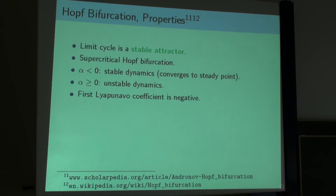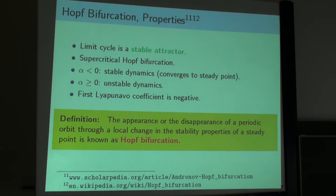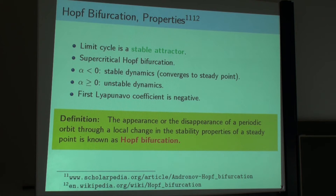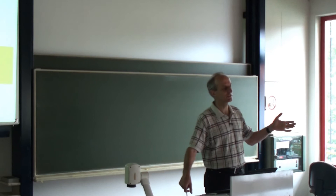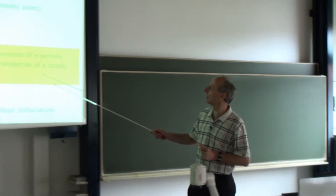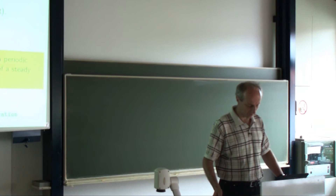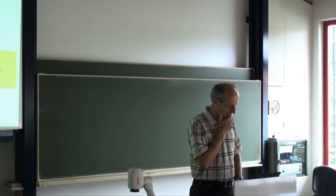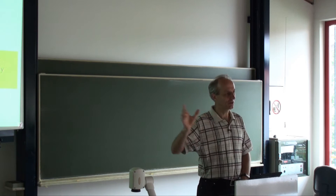Here is a definition: the appearance or disappearance of a periodic orbit through a local change in the stability properties of a steady point is known as Hopf bifurcation. For negative alpha we have one limit point, and as soon as alpha is zero or greater we get such a periodic orbit - that's what's called a Hopf bifurcation. If I remember right, Mr. Lohmann did his master thesis on mathematical analysis of Hopf bifurcations.